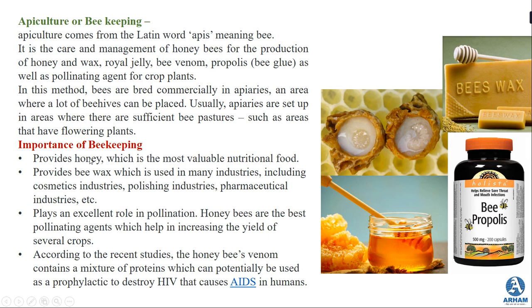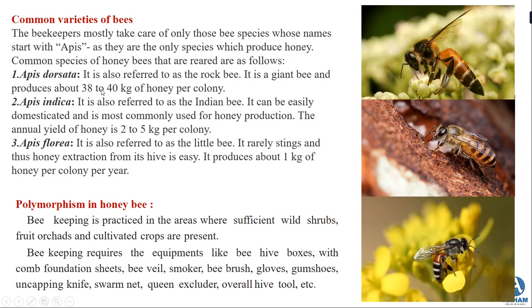Honey bees play an excellent role in pollination and are the best pollinating agents, helping to increase the yield of several crop plants. According to recent studies, honey bee venom contains a mixture of proteins that can potentially be used as a prophylactic to destroy HIV that causes AIDS in humans. So honey from bees is also being researched for curing or destroying the HIV virus.